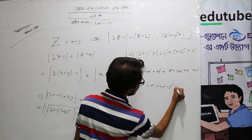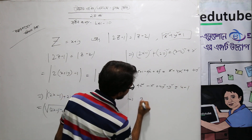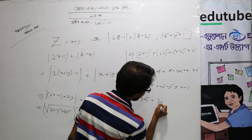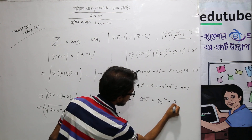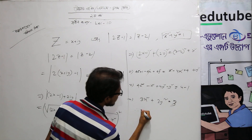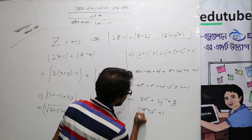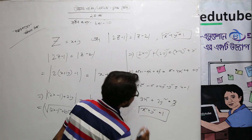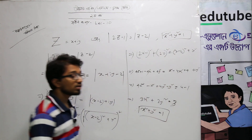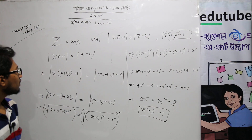4 minus 1 gives: 3x squared plus 3y squared equals 3, therefore x squared plus y squared equals 1. This is the proof that we have done.